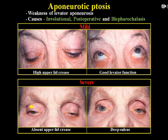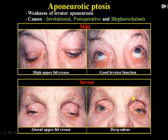Aponeurotic ptosis can be caused by trauma, surgery, or blepharochalasis. It is characterized by a high upper eyelid crease with good levator function. In severe cases, the upper eyelid crease may be absent, similar to congenital ptosis. The sulci are deep and there is loss of orbital fat.